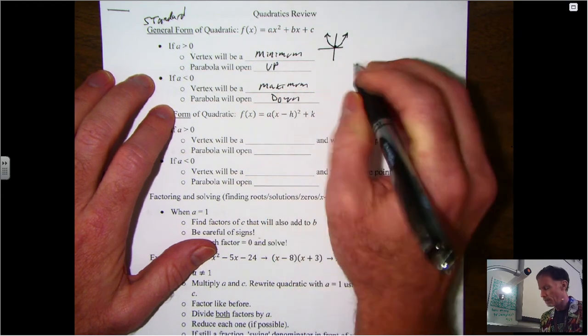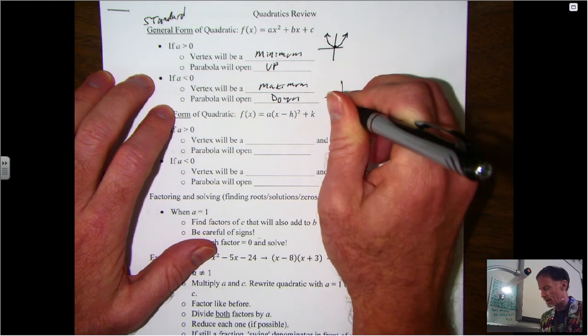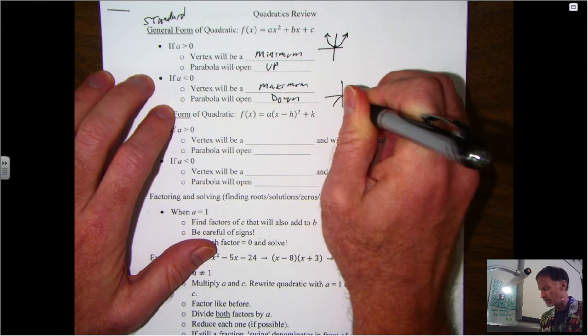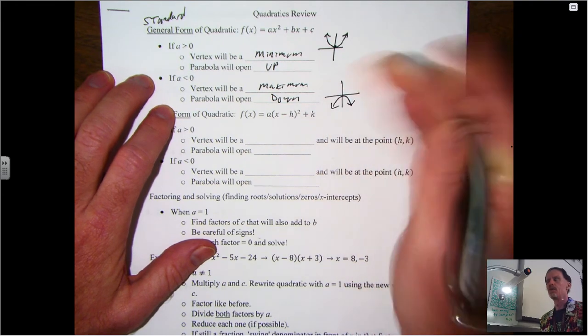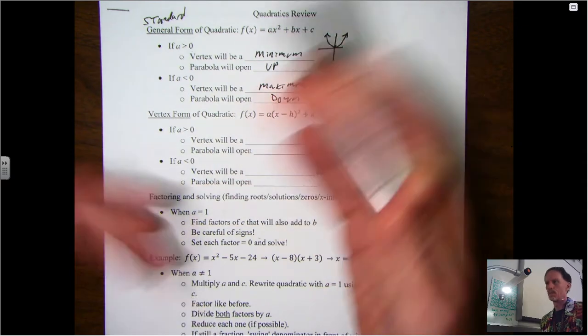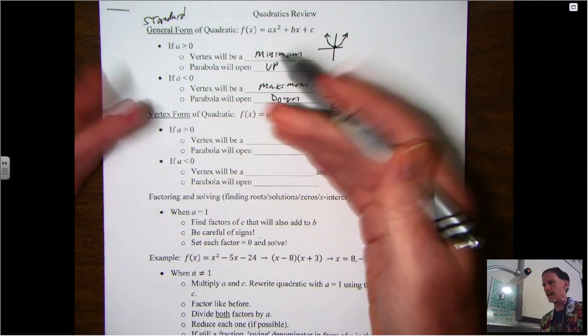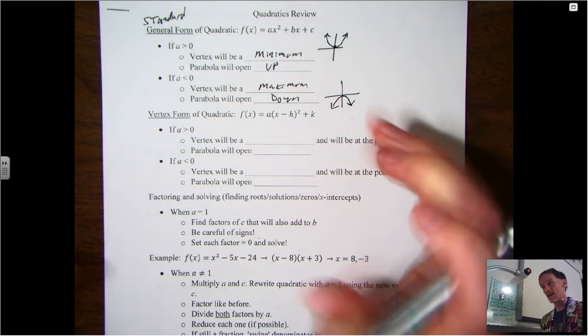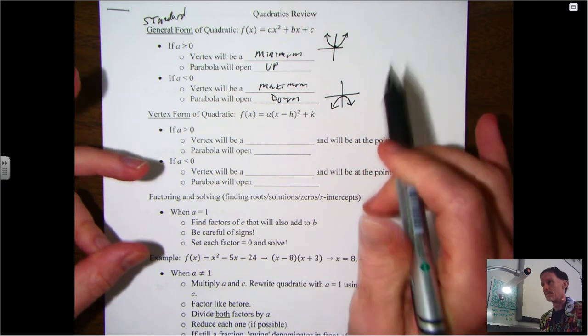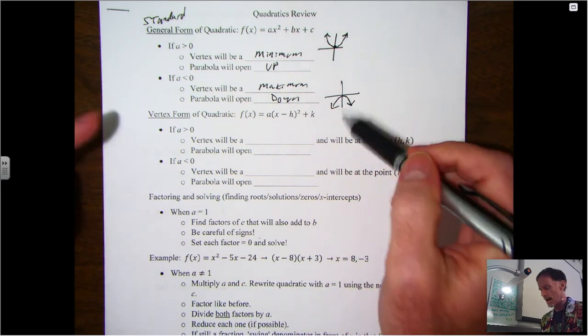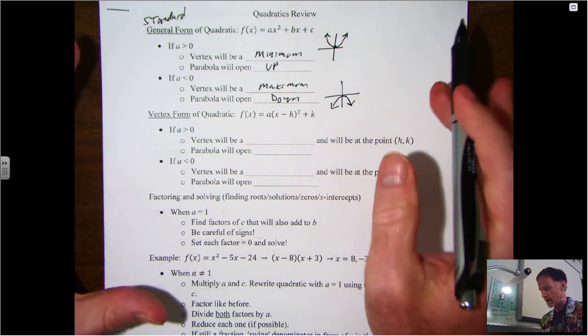And then if a is less than zero, the vertex is going to be a maximum and the parabola is going to open down. The only thing that controls the direction of a parabola is the a value. The b and the c change the y-intercept and where the vertex is located and stuff like that, but as far as the directionality of the parabola and if the vertex is a min or max, that's only controlled by the a value.